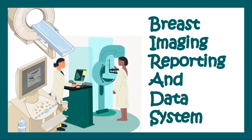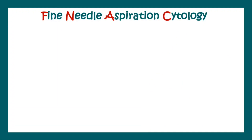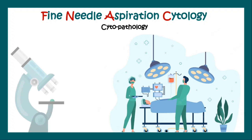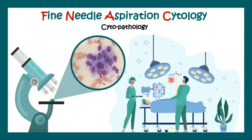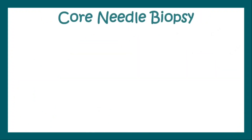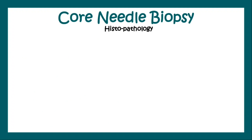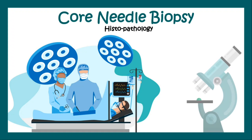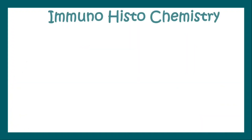Based on the BI-RADS data, the doctor sends you for pathological examination. This can be a fine needle aspiration cytology, known as FNAC, which is a cytopathology technique — meaning doctors take out some cells from your breast lump and examine them under a microscope to look for cancerous changes. Or it can be a core needle biopsy, which is a histopathology technique where doctors take out a piece of breast tissue and examine that under a microscope. These investigations help the doctor to diagnose breast cancer.